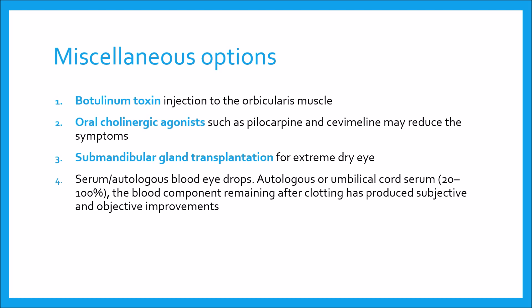Autologous or umbilical cord serum, at concentrations of 20 to 100%, uses blood components remaining after clotting and has shown subjective and objective improvement in studies in patients with dry eye; it may also aid healing of persistent epithelial defects. However, production and storage are associated with practical challenges. Fingerprick autologous blood is a low-cost, readily accessible, and practical treatment that appears to be safe and effective.